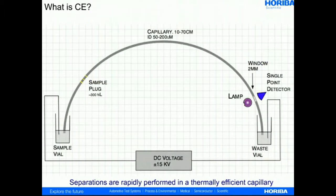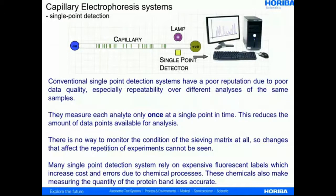What is capillary electrophoresis? It is a technique that has been established for some years, using the thermally efficient capillary to separate molecules over typically 10 to 70 centimeters. The problem with standard capillary electrophoresis is that you only have a single point detector. This means you get just one measurement event of an analyte as it crosses the detector window, which is typically a two millimeter window in the capillary — a single point in time — giving problems particularly with repeatability but also resolution.